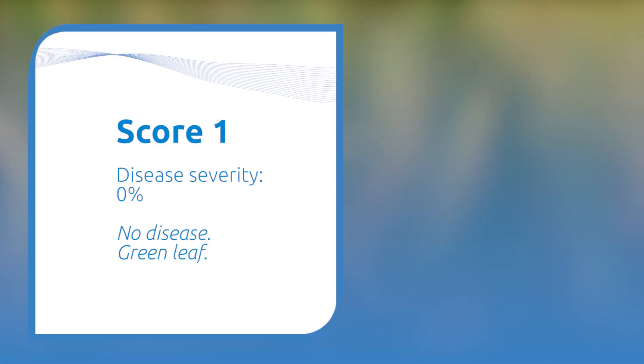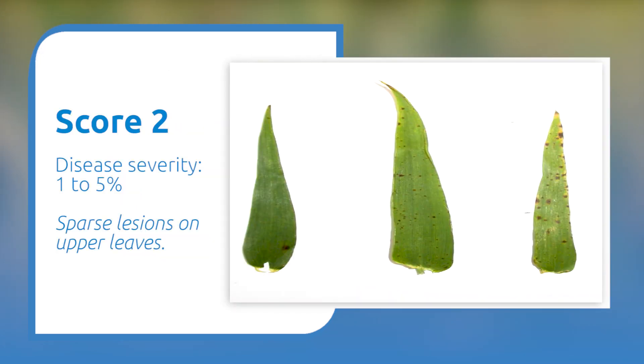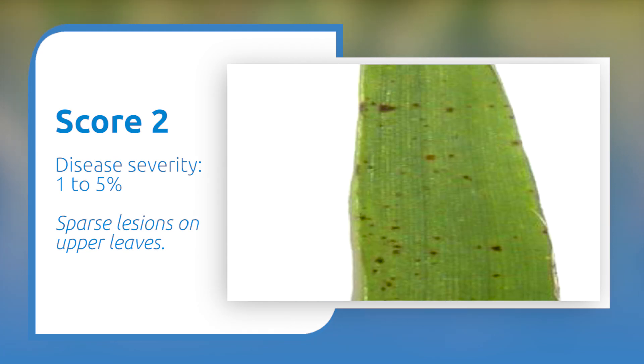EHDB have published a one to nine scoring scale for Ramularia with associated percentages, ranging from zero with no disease up to nine where you have 75 to 100% Ramularia leaf spot. Score number one is no disease or a completely green leaf. Number two is sparse lesions on the upper leaves, which we would characterize as maybe one to five percent infection with Ramularia leaf spot.